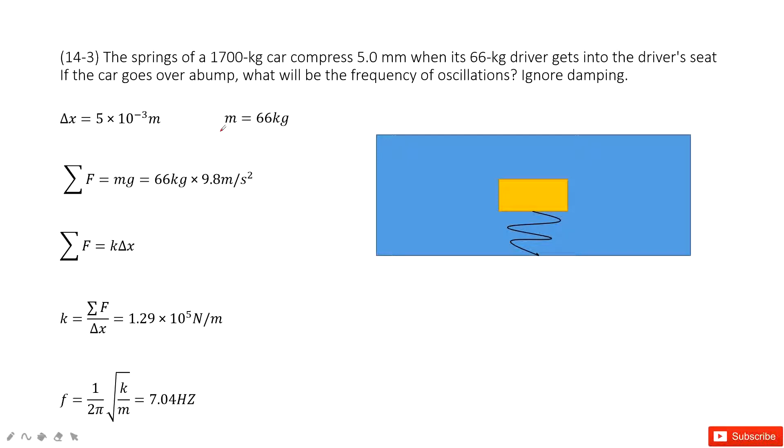In this one, we look at this system. This is a car and this yellow part is a driver. And it tells us when the driver is getting in, the car will oscillate. We need to find the frequency of oscillations.